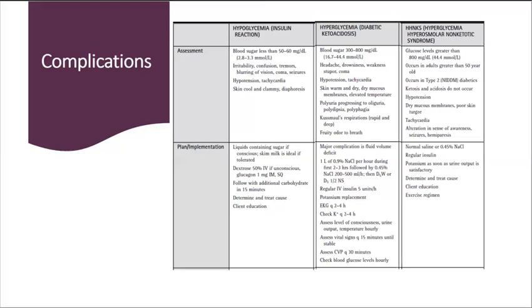Hyperglycemic hyperosmolar nonketotic syndrome is another complication that can arise. HHNKS may be caused by an acute illness or medications like thiazide diuretics or even treatments like dialysis. HHNKS occurs in adults greater than 50 years old and also in clients with type 2 diabetes. We see glucose levels greater than 800 milligrams per dL.